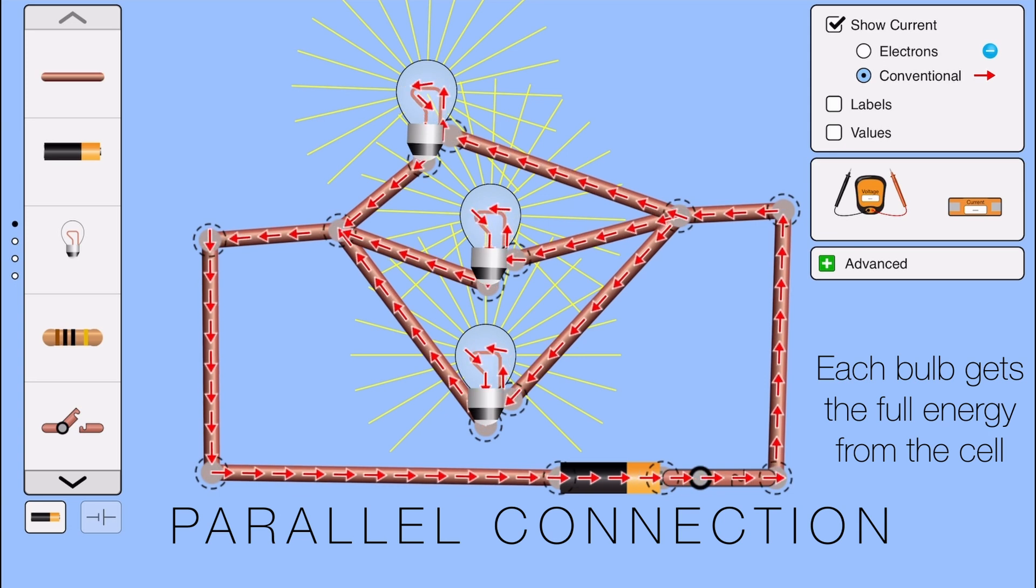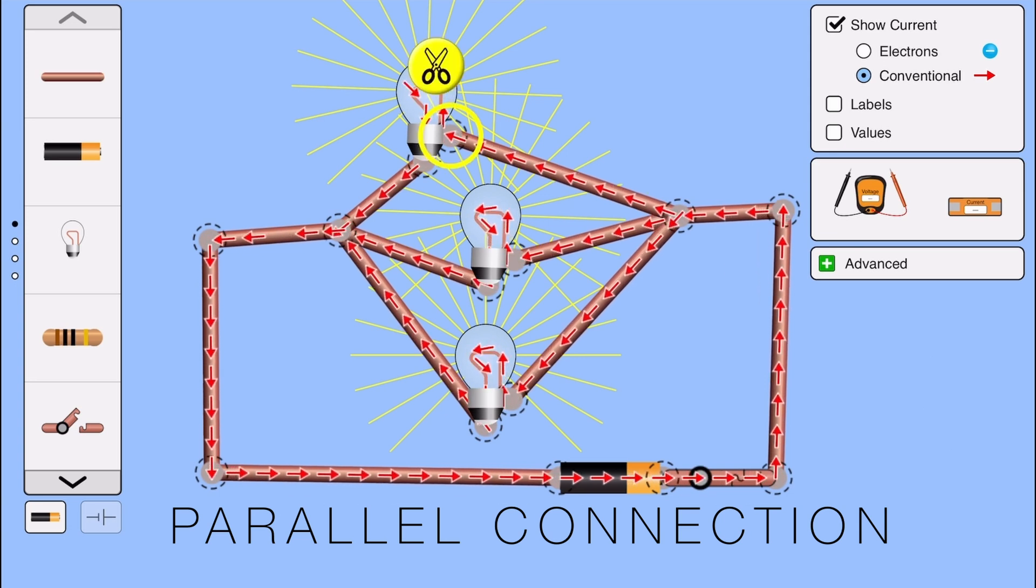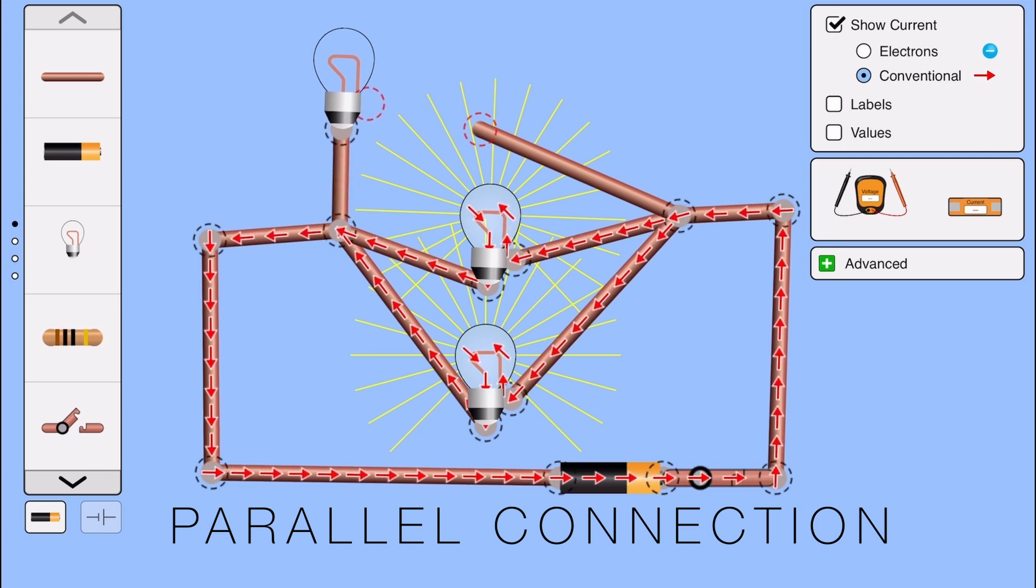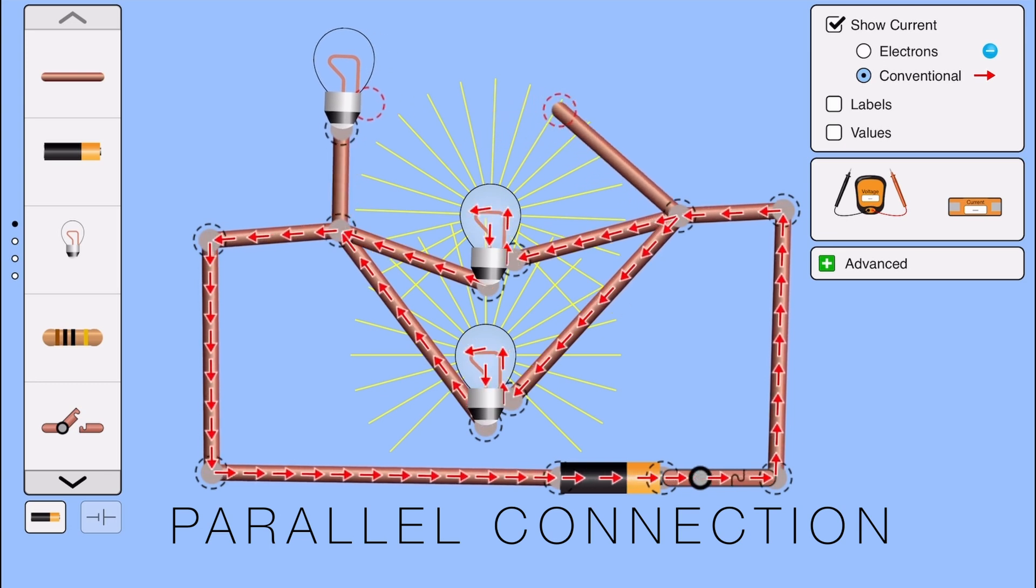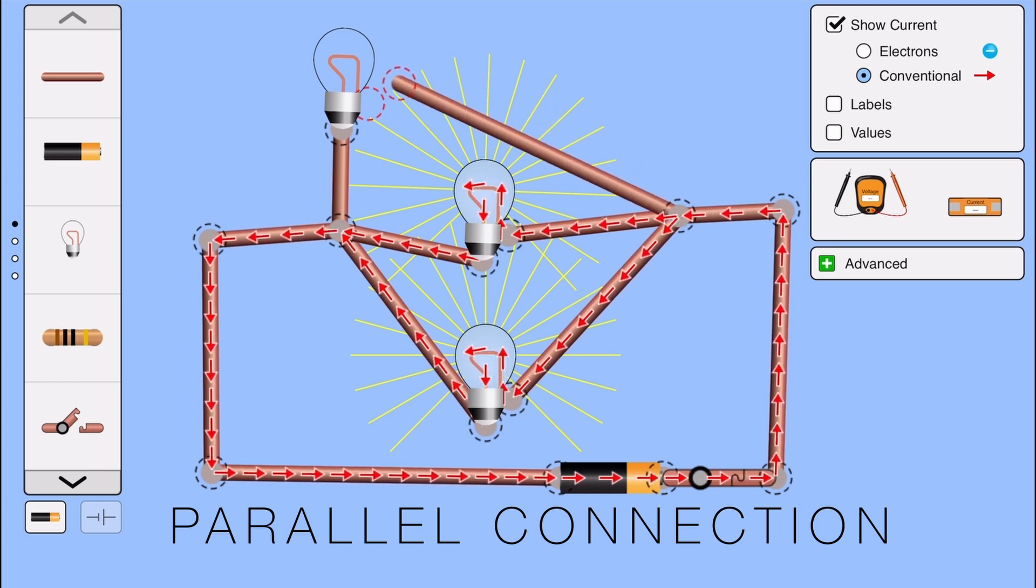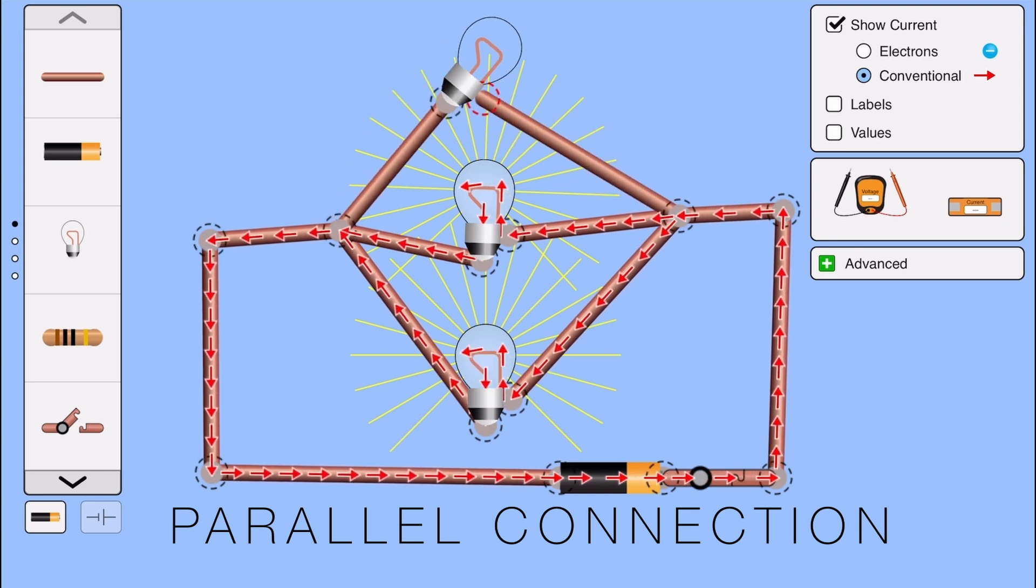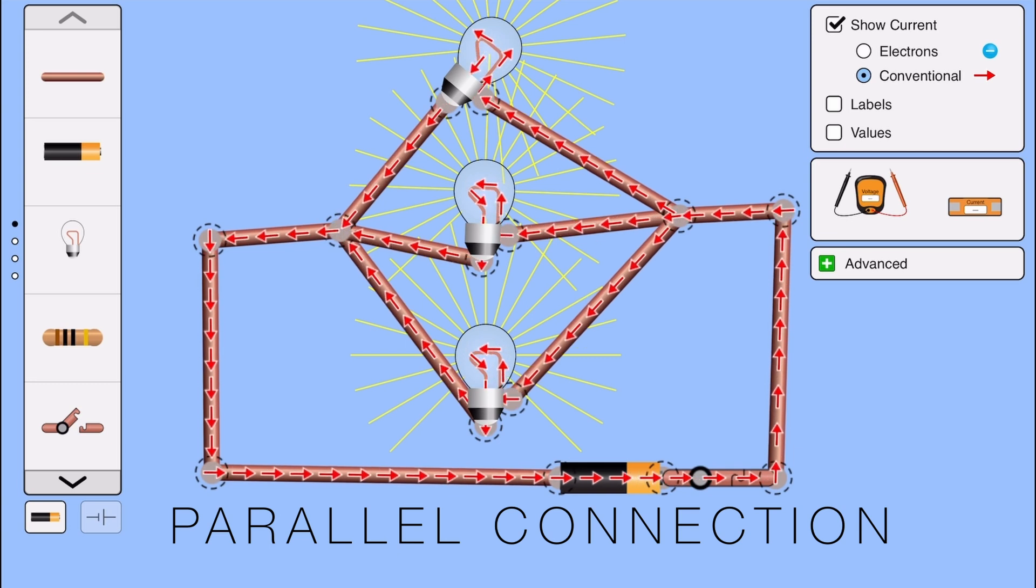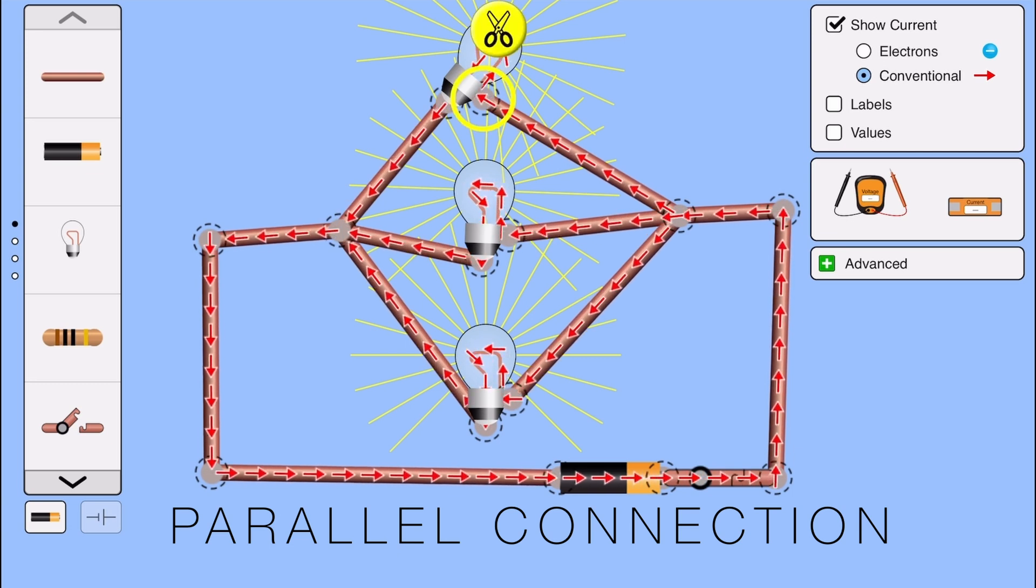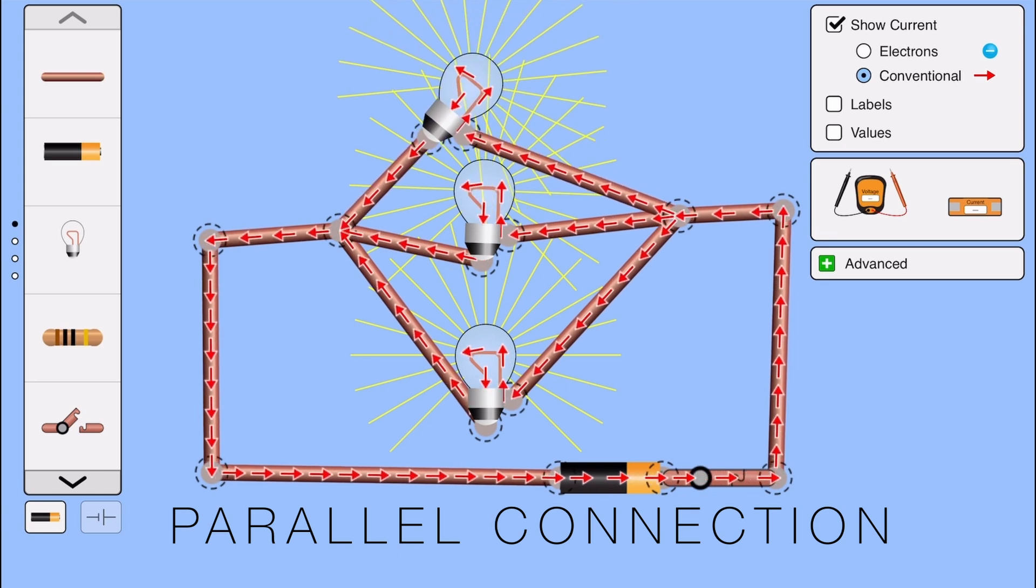Now let's test something. What if I remove one bulb? Look at that. The other bulbs are still glowing at the same brightness. Why? Because in a parallel connection, the current actually splits up. If there are four bulbs, the current divides into four parts, one for each bulb. So even if one bulb is removed, the current still flows through the other paths and rest of the bulbs keep glowing happily.